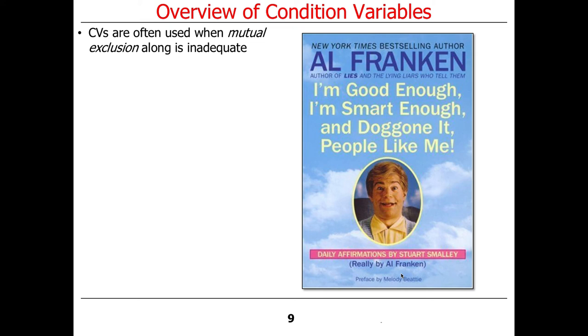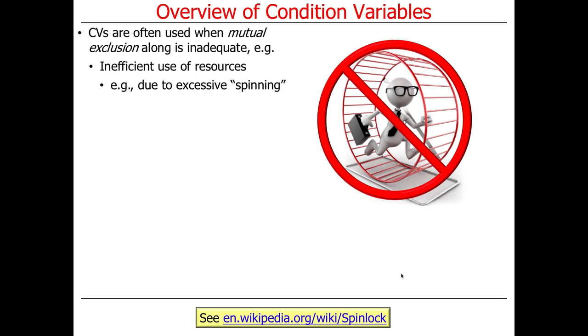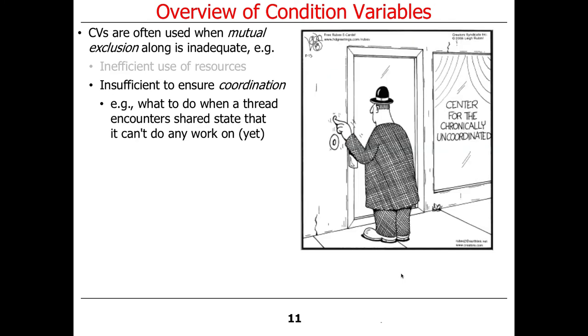One of the funniest ones was when Stuart Smalley was this sort of caring nurturer who had attended many 12-step programs who would help people with their problems. And he has Michael Jordan, the basketball player, come on his show one time. And it's really funny because he keeps trying to get Michael Jordan to admit that he feels inadequate, and he's a loser, and he's going to miss the shots at the end of the game, and people are going to hate him. And Michael's like, no, I actually feel pretty confident I'm going to make those shots. Poor Stuart just loses his mind because he can't deal with somebody who's so competent. But anyway, there are situations where mutual exclusion alone is not adequate. One situation is if you're going to end up spinning, you can just burn CPU resources, so that's a good example of the inadequacy of mutual exclusion alone. And another thing is mutual exclusion is often insufficient to ensure coordination, or at least efficient coordination.